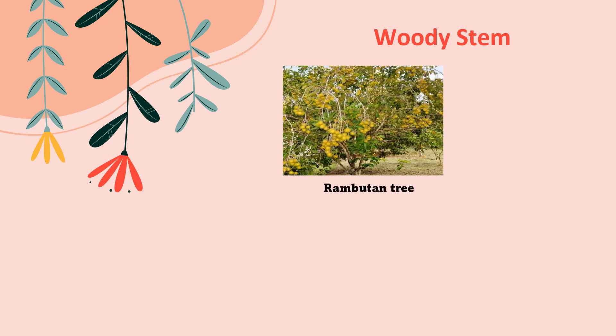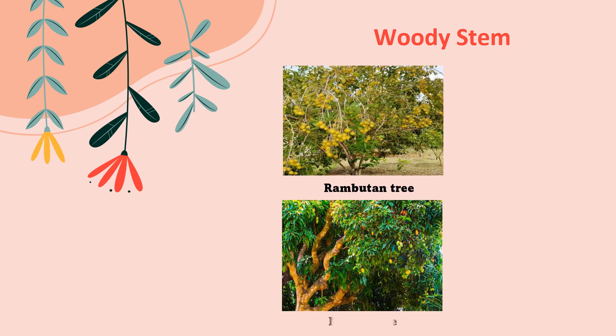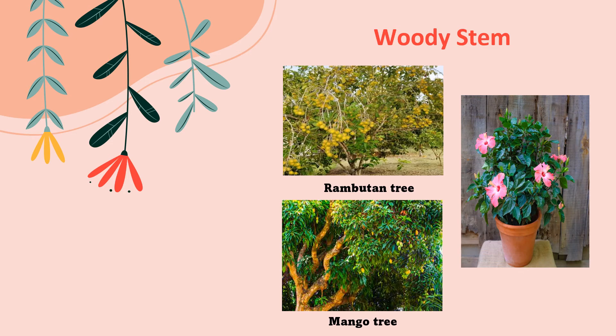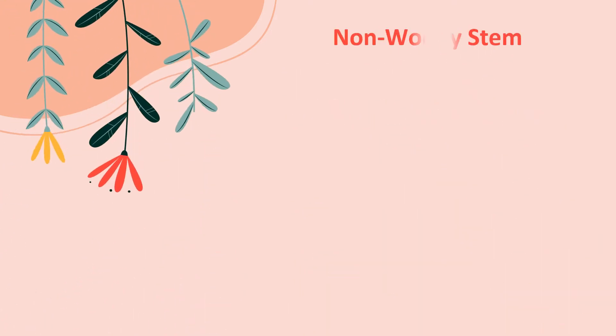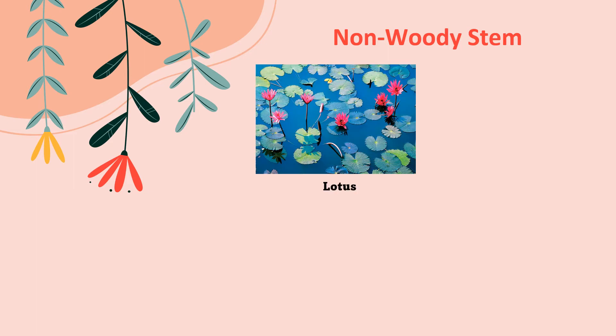What are the examples of plants with a woody stem? First one, rambutan tree; second one, mango tree; and third one, hibiscus. These are examples of woody stem plants. How about plants with a non-woody stem? Examples include lotus and peppermint.